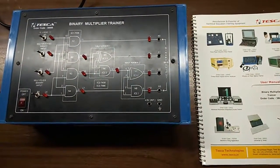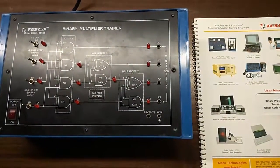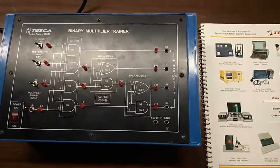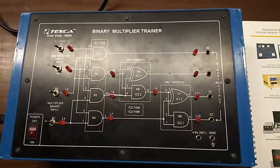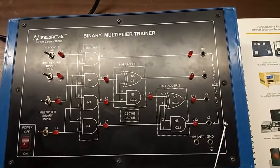Today, we are going to show you our Binary Multiplier trainer kit order code 38666. This is the trainer kit, this is the mimic diagram given on the trainer kit.